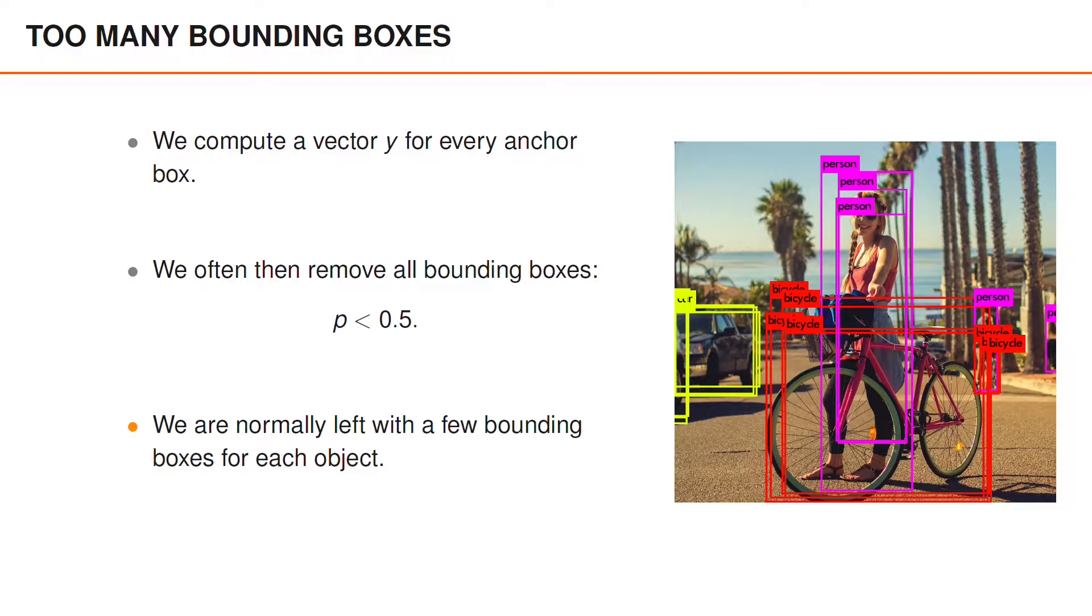For instance, as you can see we've produced three bounding boxes for the person in the middle of the image to the right. To understand why this happens please recall that we often have say a 19 by 19 grid. Among all of these grids there are many anchor boxes that overlap considerably with this person and it may not be surprising that for several of the anchor boxes we report that the person should be associated to the anchor box.